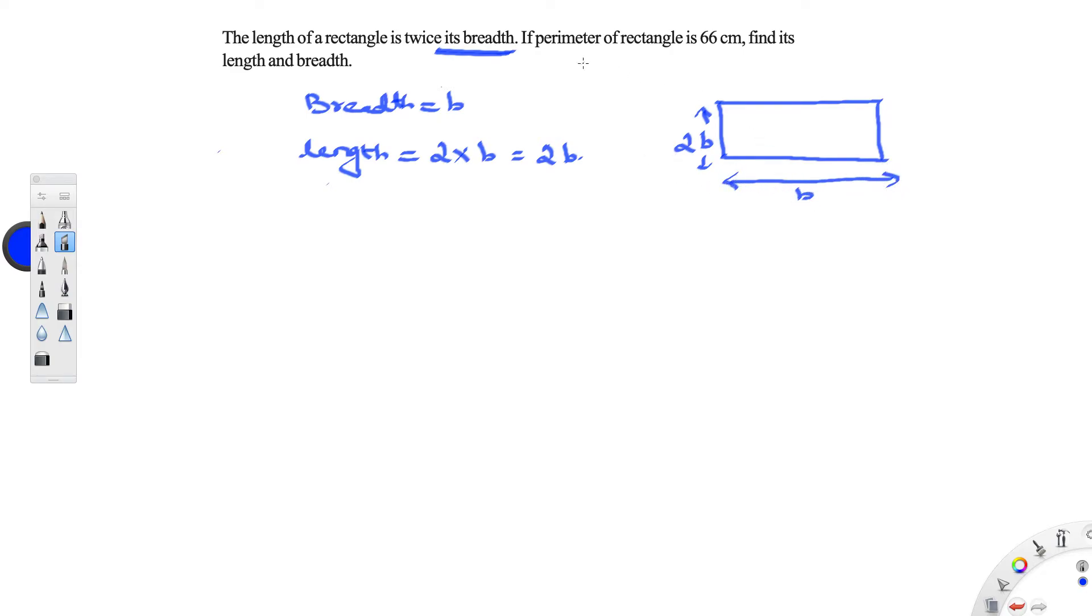Boundary is like perimeter is boundary of this rectangle. Adding up all these will equal to 66 cm. If this is b, then this is b. If this is 2b, then this is also 2b. So adding up all this is equal to 66 cm.